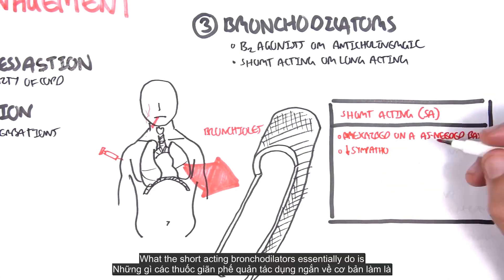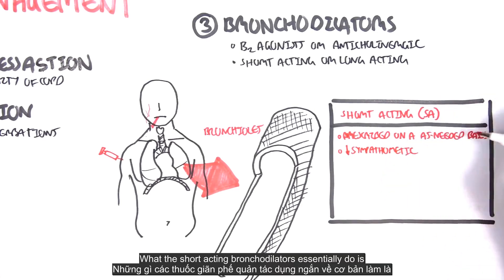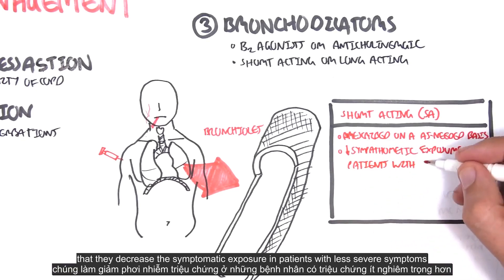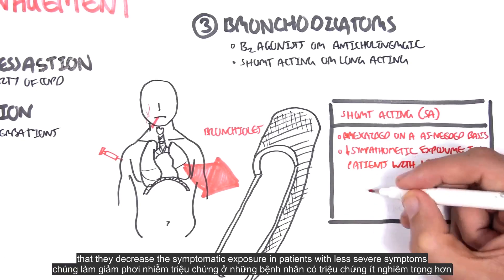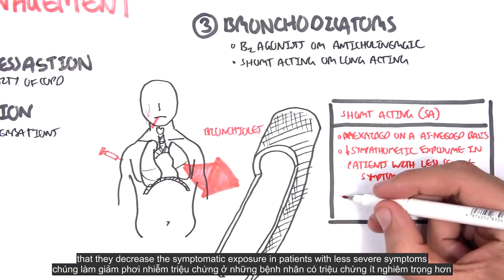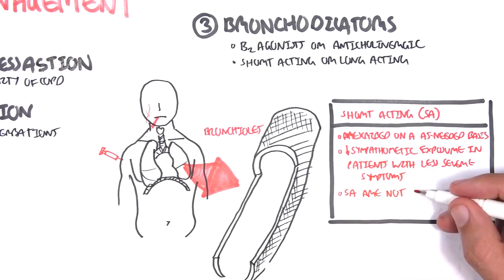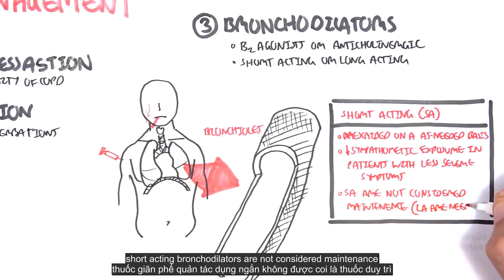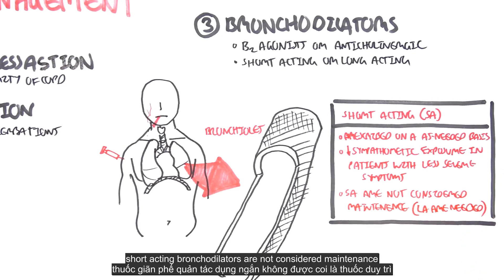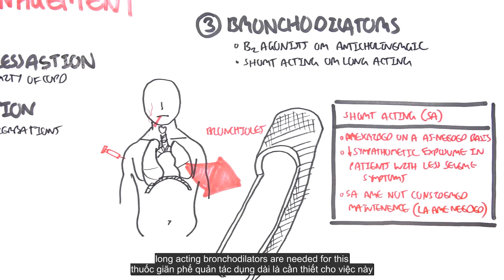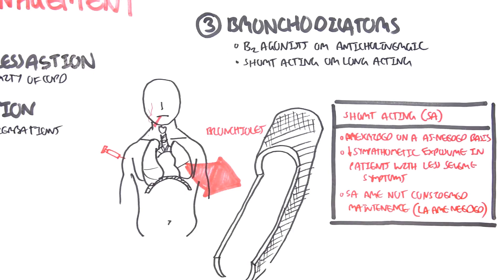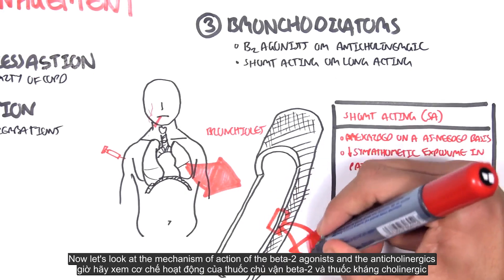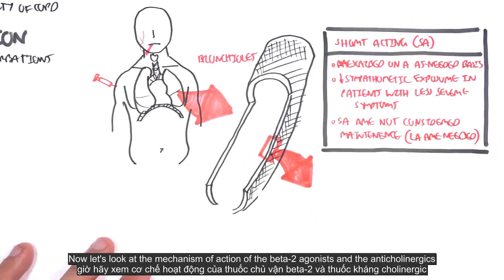Short-acting bronchodilators decrease symptomatic exposure in patients with less severe symptoms. Short-acting bronchodilators are not considered maintenance therapy — long-acting bronchodilators are needed for that. Now let's look at the mechanism of action of the beta-2 agonists and the anticholinergics.